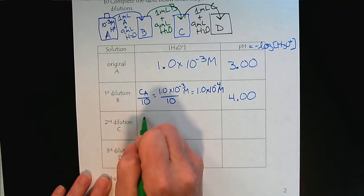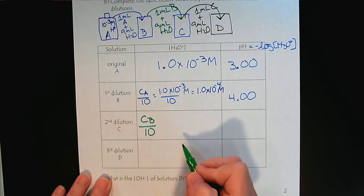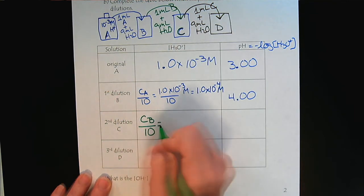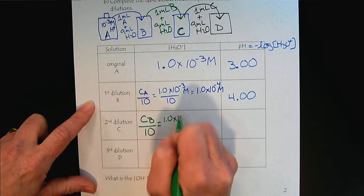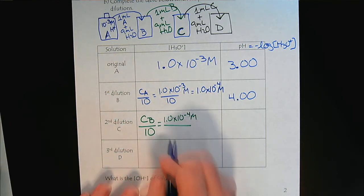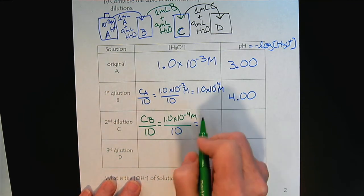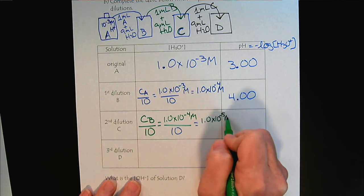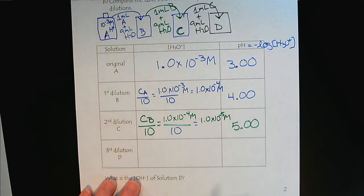To get to C, so for C, we'll have the concentration of B divided by 10. So our concentration for B was 1.0 times 10 to the minus 4 molar. And then we're going to divide that by 10. And so solution C, 1.0 times 10 to the minus 5 molar, which would give us a pH of 5.00.